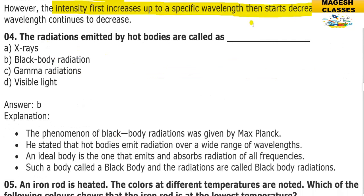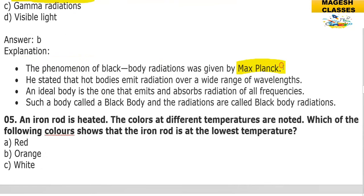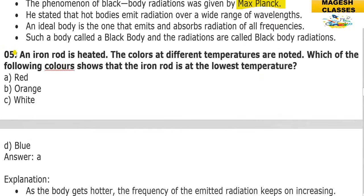The radiation emitted by hot bodies is called black body radiation. The phenomenon was explained by Max Planck, who stated that hot bodies emit radiation over a wide range of wavelengths. An ideal black body both emits and absorbs radiation at all frequencies. An iron rod is heated and the colors at different temperatures are noted — lambda-max and temperature are inversely proportional.